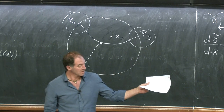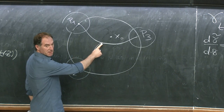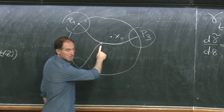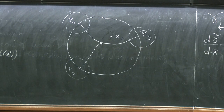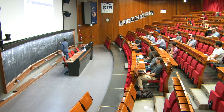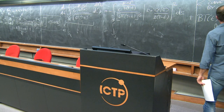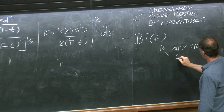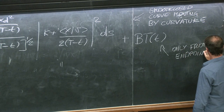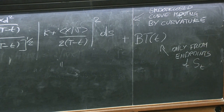The modified monotonicity formula for a network is: the time derivative of the Huisken integral equals minus the integral of the squared term, plus some boundary terms T coming only from the endpoints of S(T) — with no contribution from the triple junctions.